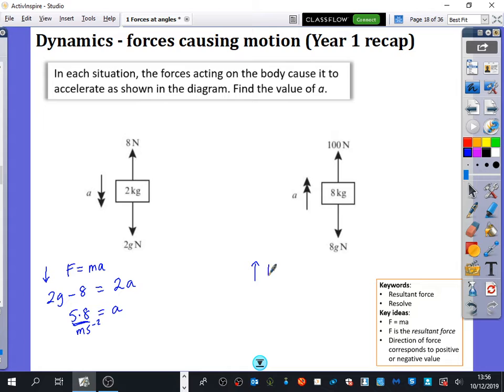The top one is bigger, so I'm going to resolve it in the upwards direction. I know this is going to be bigger now, so I'm going to say 100 minus 8G. That's my resultant force is equal to the mass times the acceleration. So I just do 100 minus 8 times 9.8 divided by 8, and you get that the acceleration is 2.7 metres per second squared.